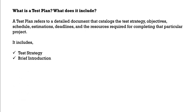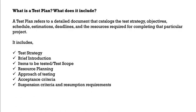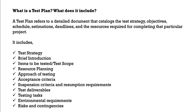A test plan includes: test strategy, brief introduction, items to be tested or test scope, resource planning, approach of testing, acceptance criteria, suspension or resumption requirements which is entry and exit criteria, test deliverables, testing tasks, environmental requirements, and risk and contingencies. These items differ from organization to organization, but mandatory inclusions are environment requirements, resource planning, test scope, and entry and exit criteria.